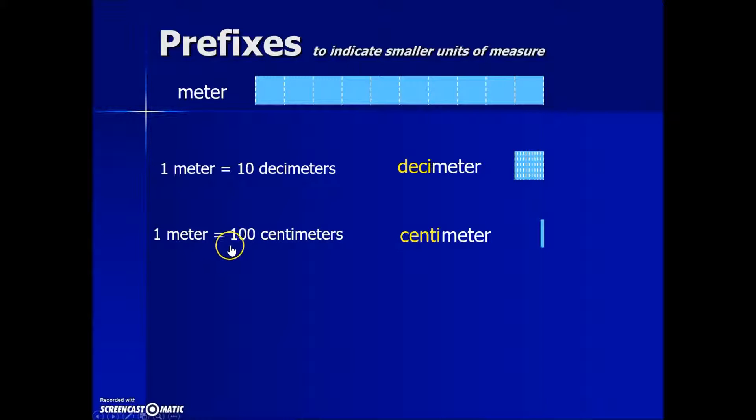Because we take 10 decimeters to equal a meter, 10 times 10 means we need 100 centimeters to equal a meter. If we further dissect the centimeter into 10 parts, the prefix to represent that is a millimeter. One tenth of a centimeter is a millimeter or 10 times 10 times 10, 1000 millimeters are necessary to equal one meter. The prefix milli means one thousandth of a meter.